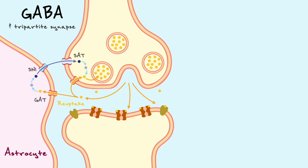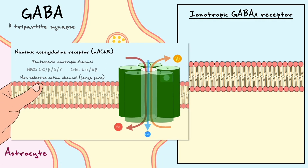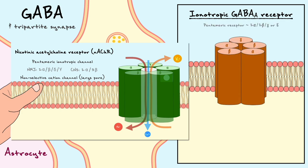When GABA is in the synaptic cleft, it can interact with both ionotropic and metabotropic receptors. The ionotropic receptor is named GABA-A and the metabotropic receptor is named GABA-B. The GABA-A channel has a very similar structure to the nicotinic acetylcholine receptor — it is a pentamer, usually composed of two alpha, two beta, and one gamma or delta subunit.